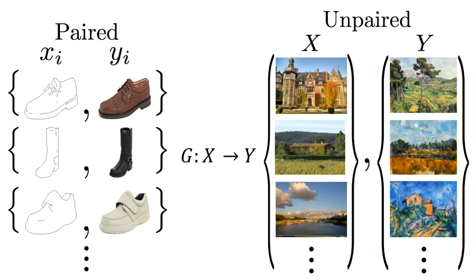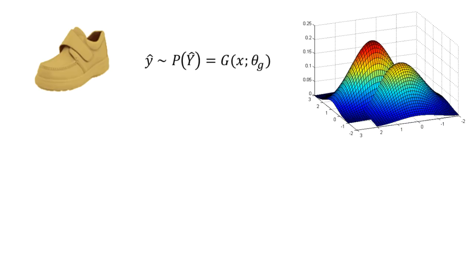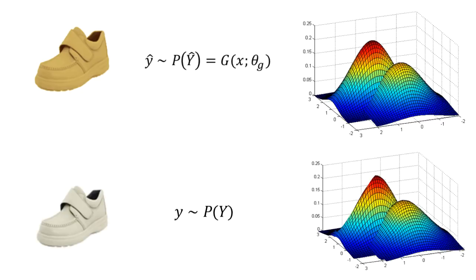Hence, we are looking for an algorithm that works on unpaired image data, where we have a set of photo-style images X and another set of Monet-style paintings Y, but we don't have access to Monet paintings for every single input sample image. Such data is much easier to gather. We assume there exists a mapping between images X to its corresponding image in Y. Our goal is to train a model to learn this mapping G. A typical objective we use to train this GAN — to learn the mapping G — is an adversarial loss, which forces the generated images to be indistinguishable from the real images Y.